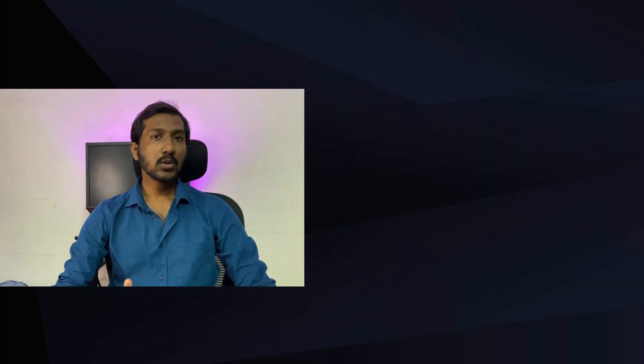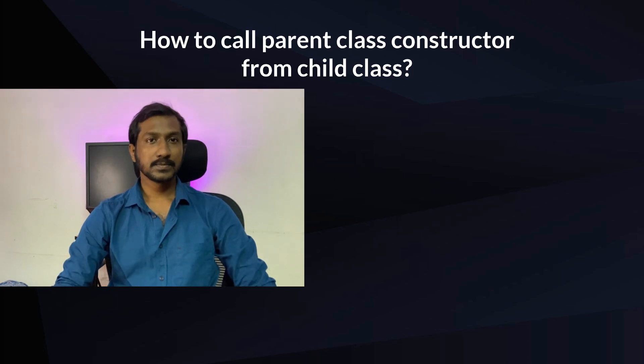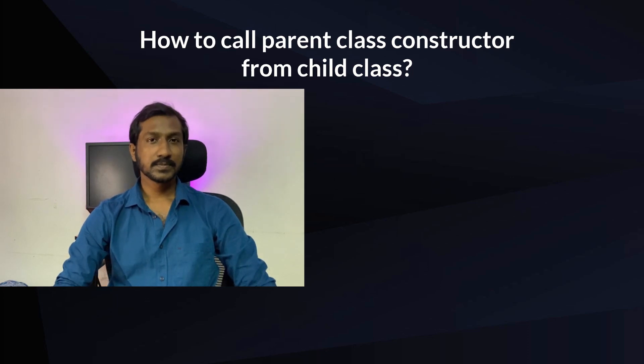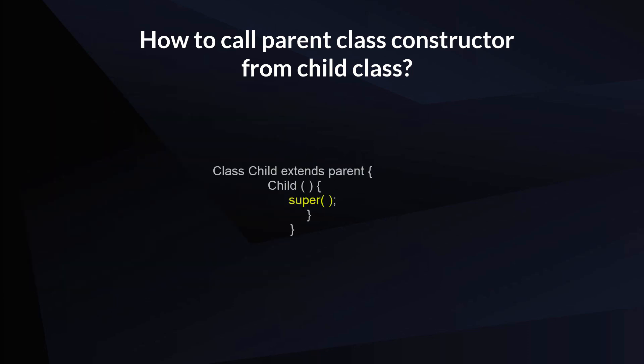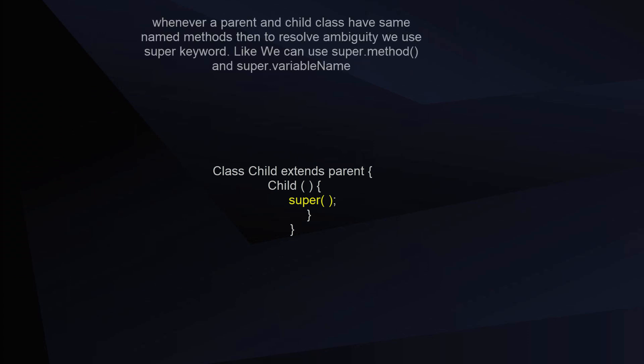Consider a parent class and a child class — how do we call the parent class constructor from the child class? When you create an object of the child class, the superclass no-argument constructor is called implicitly. If you want to call it explicitly, you use the super keyword.